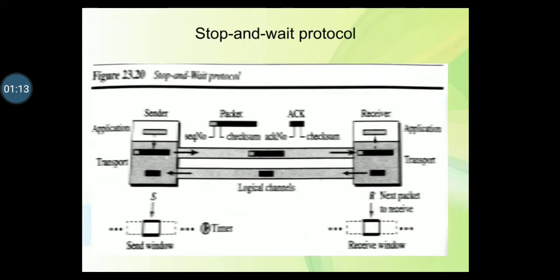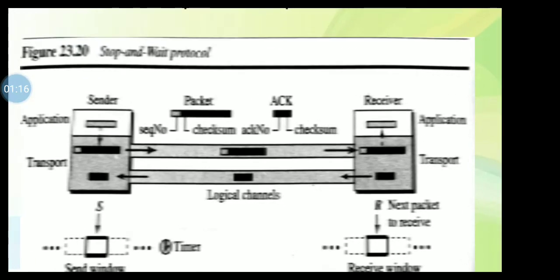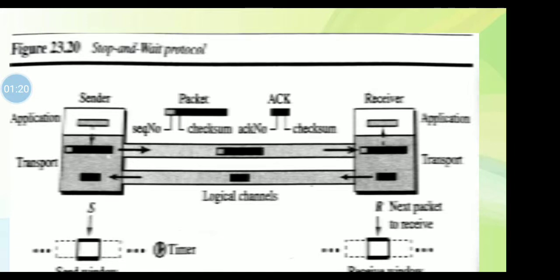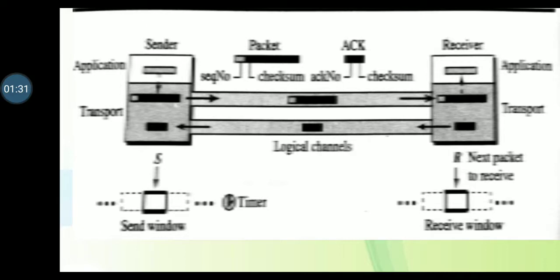When a packet arrives at the receiver side, it is checked — if its checksum is incorrect, the packet is corrupted and silently discarded. This diagram illustrates the Stop-and-Wait protocol, showing logical channels, a timer, send window, receive window, packet sequence numbers, checksums, and acknowledgements. The silence of the receiver is a signal to the sender that the packet was either lost or corrupted, meaning the sender needs to keep a copy of the packet.